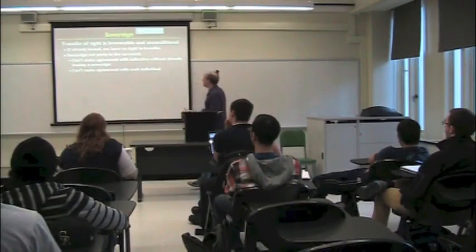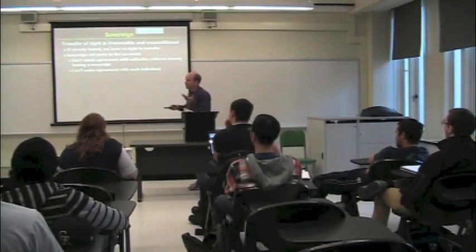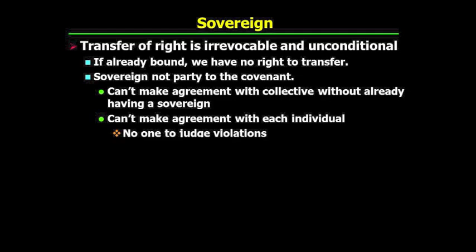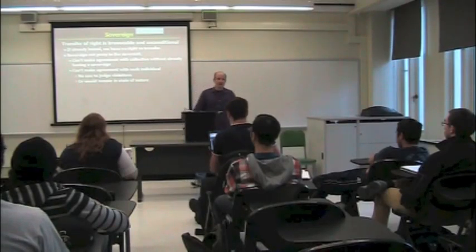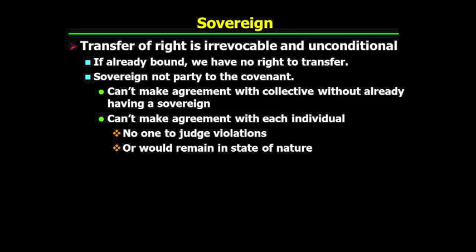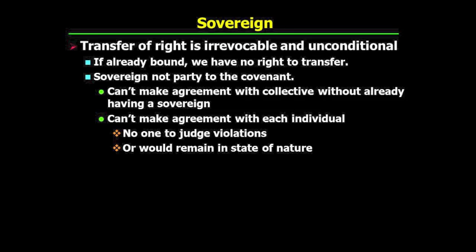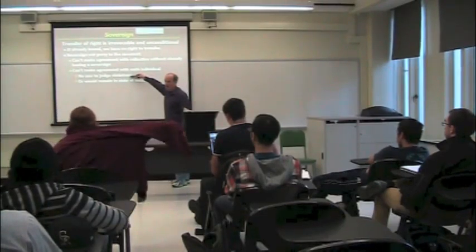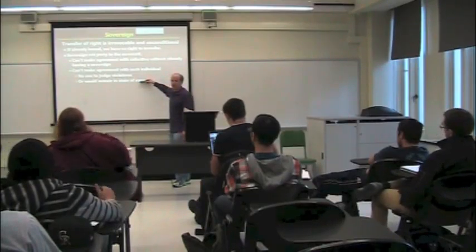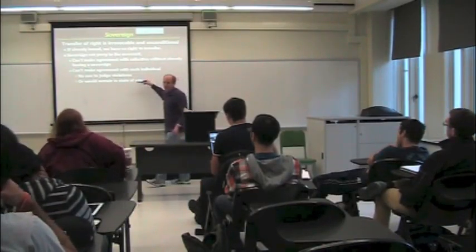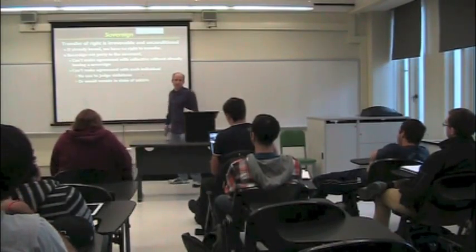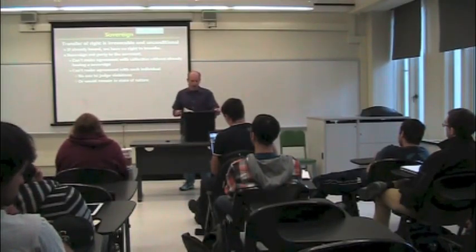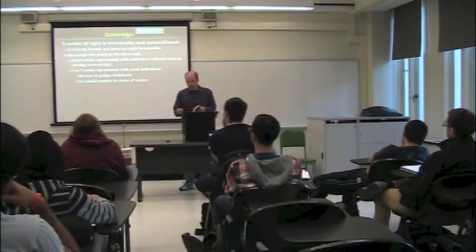So, we can't make an agreement with, sorry, the sovereign, the would-be sovereign. We can't make an agreement with each individual because there would be no one to judge the violations. He himself did. Or, we'd actually be in the state of nature still. So, in this case, we may actually get a sovereign, but he won't be bound by anything. In this case, we wouldn't actually get a sovereign. So, you can't get a sovereign, he says, through this kind of contract.